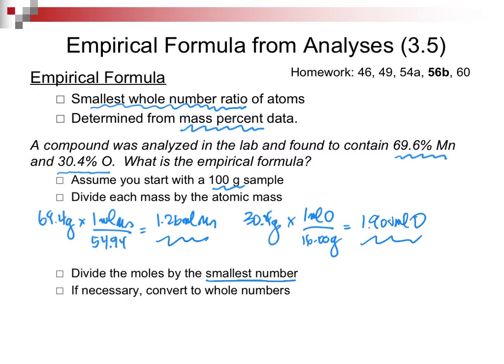Easier to show than to keep talking. For my manganese, I have 1.267. I divide it by 1.267, and I come up with the value of 1. For oxygen, I have 1.900. I divide by 1.267, and I come up with the number 1.49. Now, it says if necessary, convert to whole numbers. Well, we can turn 1.49 into a whole number 3 by multiplying by 2. We need to do the same thing for manganese, and we will come up with Mn2O3.